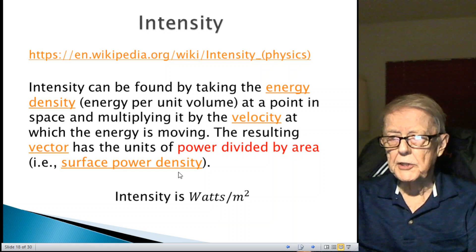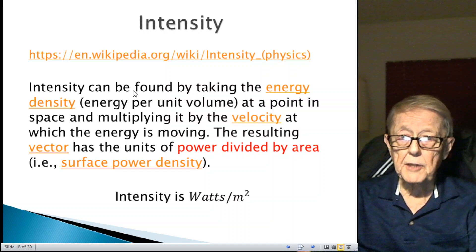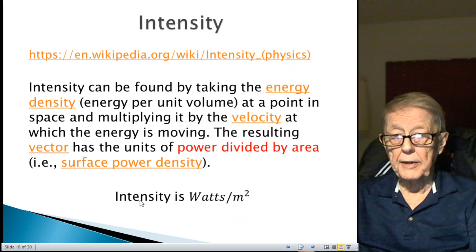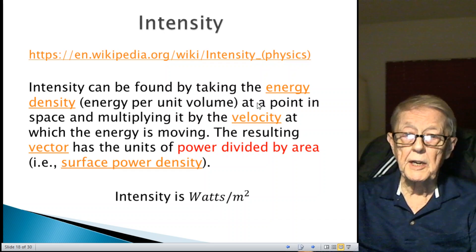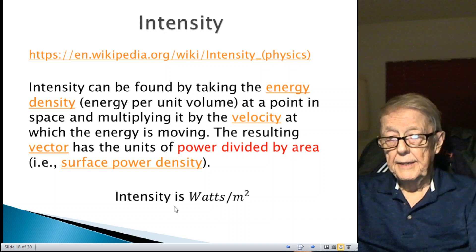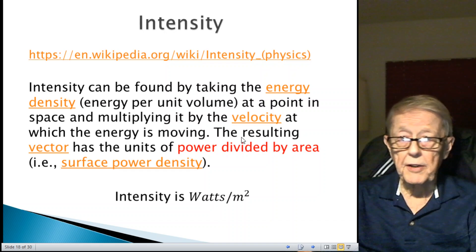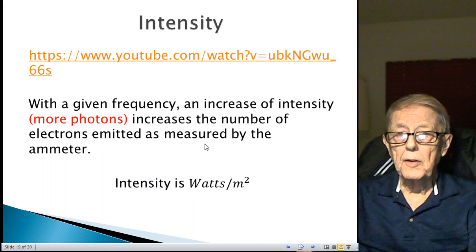Intensity, what is it? What are they changing when they change intensity in that circuit? I looked this up in Wikipedia. The intensity can be found by taking the energy density, that's the energy per volume, at a point in space and multiplying by the velocity at which the energy is moving. The resulting vector has units of power divided by area and intensity as expressed in watts per meter. And yes, that all works, but we're talking about energy density, velocity, multiplying together, getting a vector. What are they doing? I mean, that's a lot of good words. You can look up energy density, you can look up velocity, you can look up vector, try to understand. It's not so easy.